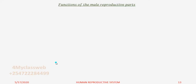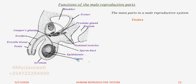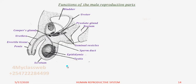This time I want us to look at the function of each part of these reproductive parts. I have my diagram again so that as we mention each of these parts I should be able to identify the position of each. I will begin with the testes, then the epididymis, the scrotum, the sperm duct, the penis, and the urethra. Those six parts are the main parts of the male reproductive system and we will now look at each one and its function.